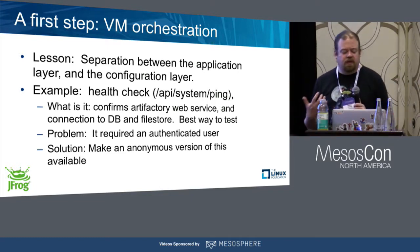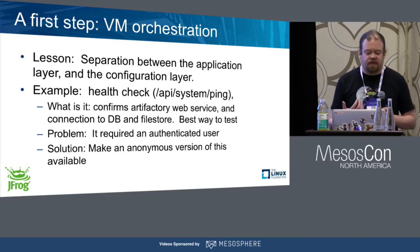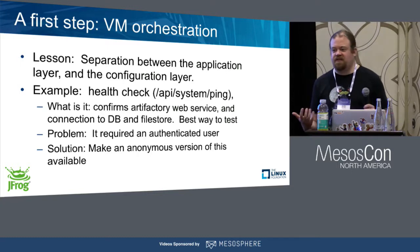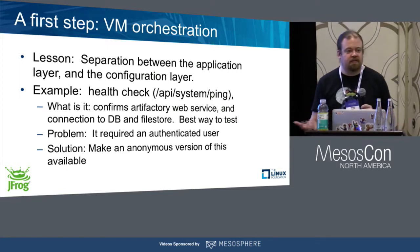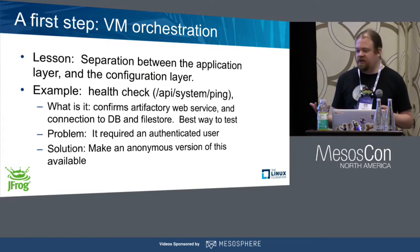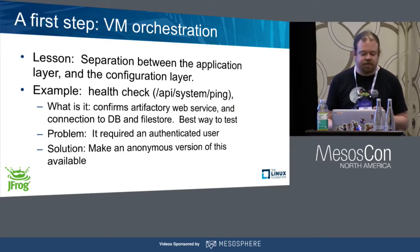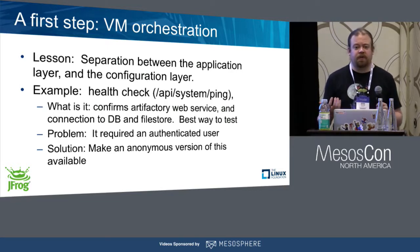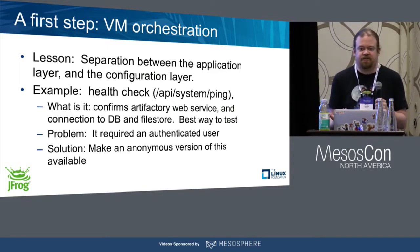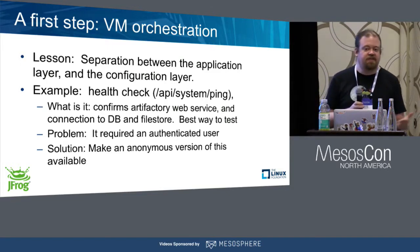We learned a lot about separating the application layer and the configuration layer. A real example is the health check — a basic function of any orchestration platform. Artifactory has long had a great health check via the API system ping, which tests network connectivity and does basic health check functions on the application. The problem was it required a real user. If anonymous access was enabled you didn't need credentials, but if someone locked down their Artifactory and turned off all anonymous access, you needed to insert credentials. This wasn't a problem in our SaaS edition where we have a backdoor account for this.